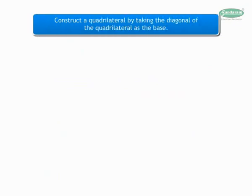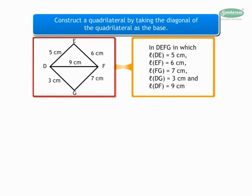We can also construct a quadrilateral by taking the diagonal of the quadrilateral as the base. Let us see an example. In quadrilateral DEFG, length DE is equal to 5 cm, length EF is equal to 6 cm, length FG is equal to 7 cm, length DG is equal to 3 cm, and length DF is equal to 9 cm. Draw a rough figure and mention the measurements for our reference. Now we shall begin with our construction.